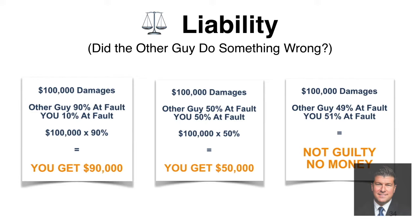This is important to understand because insurance companies, every chance they get, will fight you on liability. They'll try to make a mountain out of a molehill with any evidence they can find. If they can find one witness to say you did something wrong, they're shooting for that 'not guilty, no money' outcome — or at least reducing your award by a substantial percentage. If there's any credible argument that you were partially at fault, they will make it.